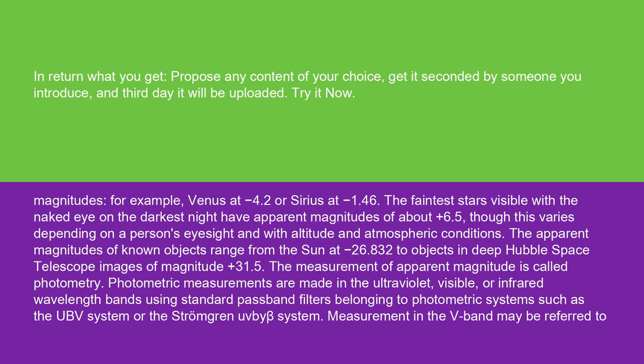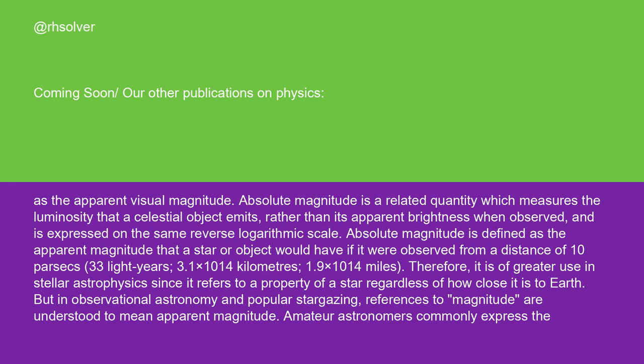The measurement of apparent magnitude is called photometry. Photometric measurements are made in the ultraviolet, visible, or infrared wavelength bands using standard passband filters belonging to photometric systems such as the UBV system or the Strömgren uvby-beta system. Measurement in the V-band may be referred to as the apparent visual magnitude.